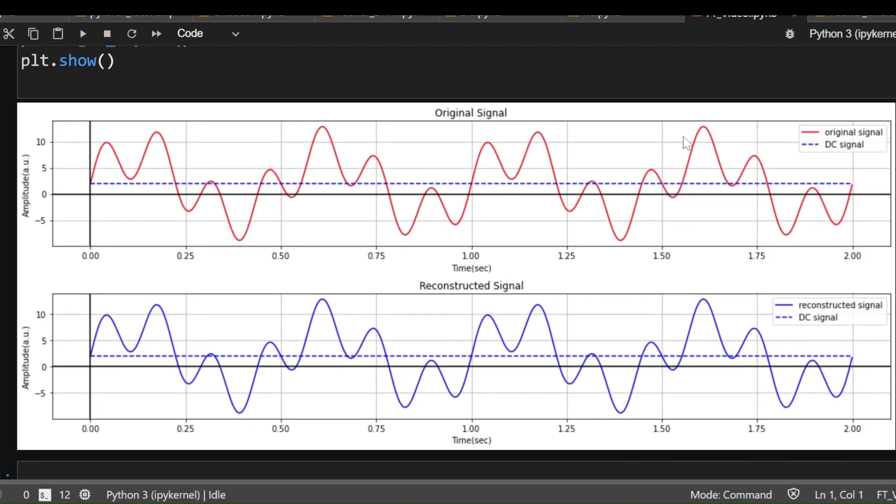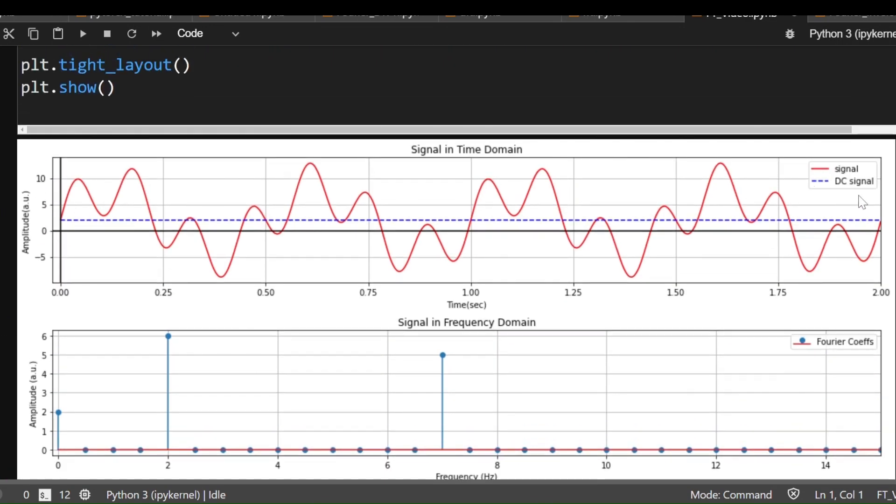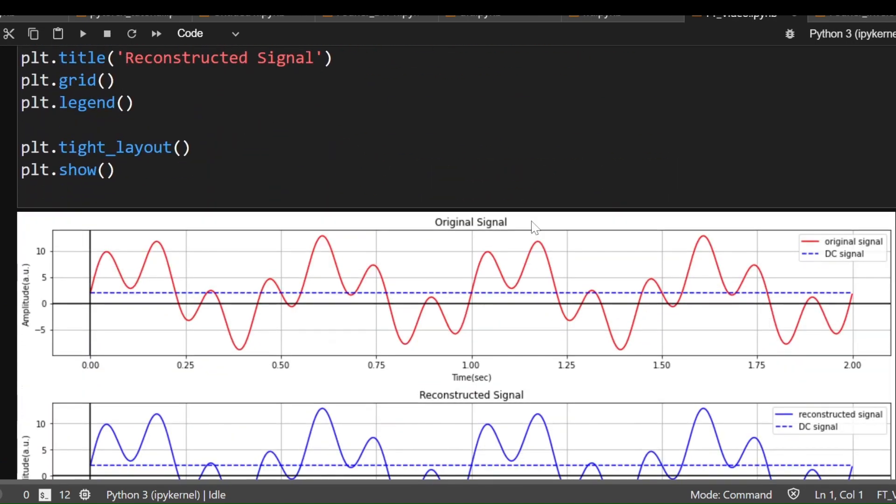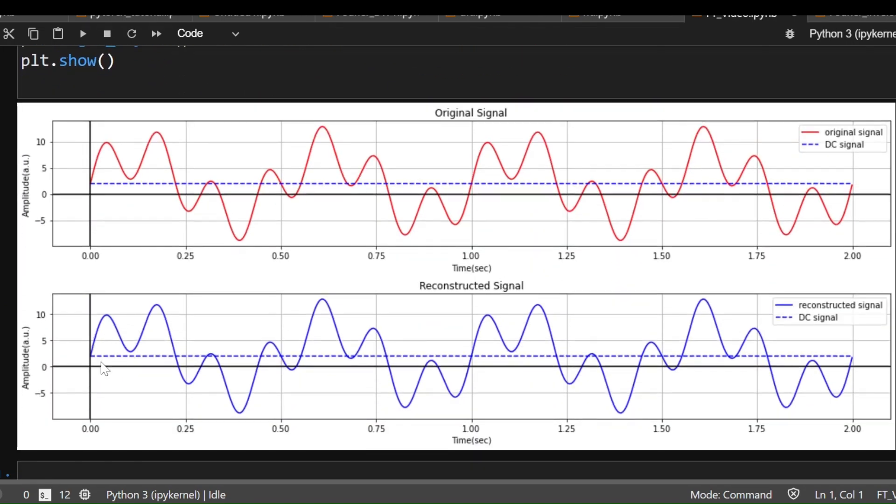Here we are. If you see, this was my original signal. This is exactly the same as I have plotted here and after doing inverse DTFT, I am able to recover everything back including the DC components. There is no difference in phases, the signal is perfect, the DC component has been recovered and that is how inverse DTFT works. It is as simple as that.